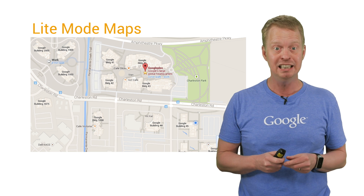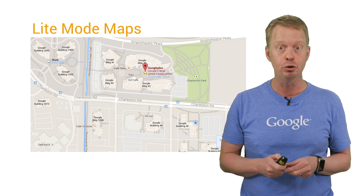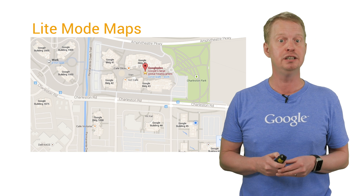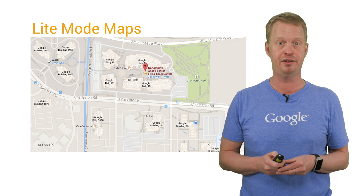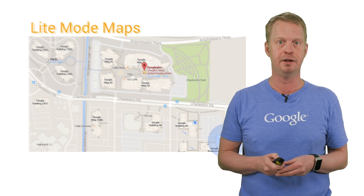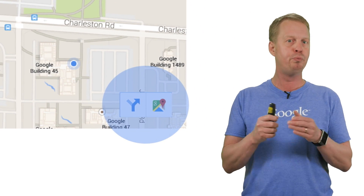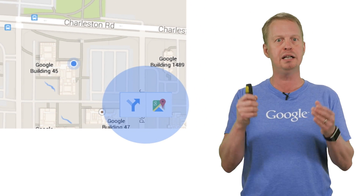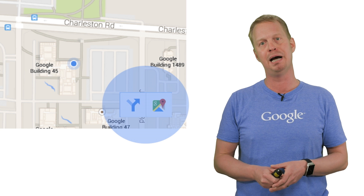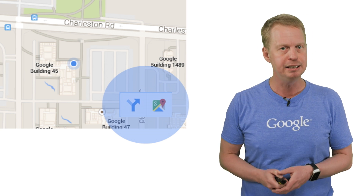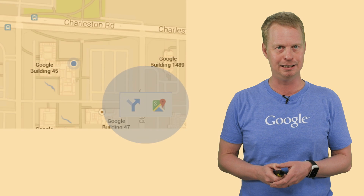It is really easy to switch to full-blown map functionality — the user just needs to tap on the static image. We've also added a new toolbar. This toolbar works for both regular as well as Light Mode Maps and enables the user to quickly open Google Maps and immediately get directions.